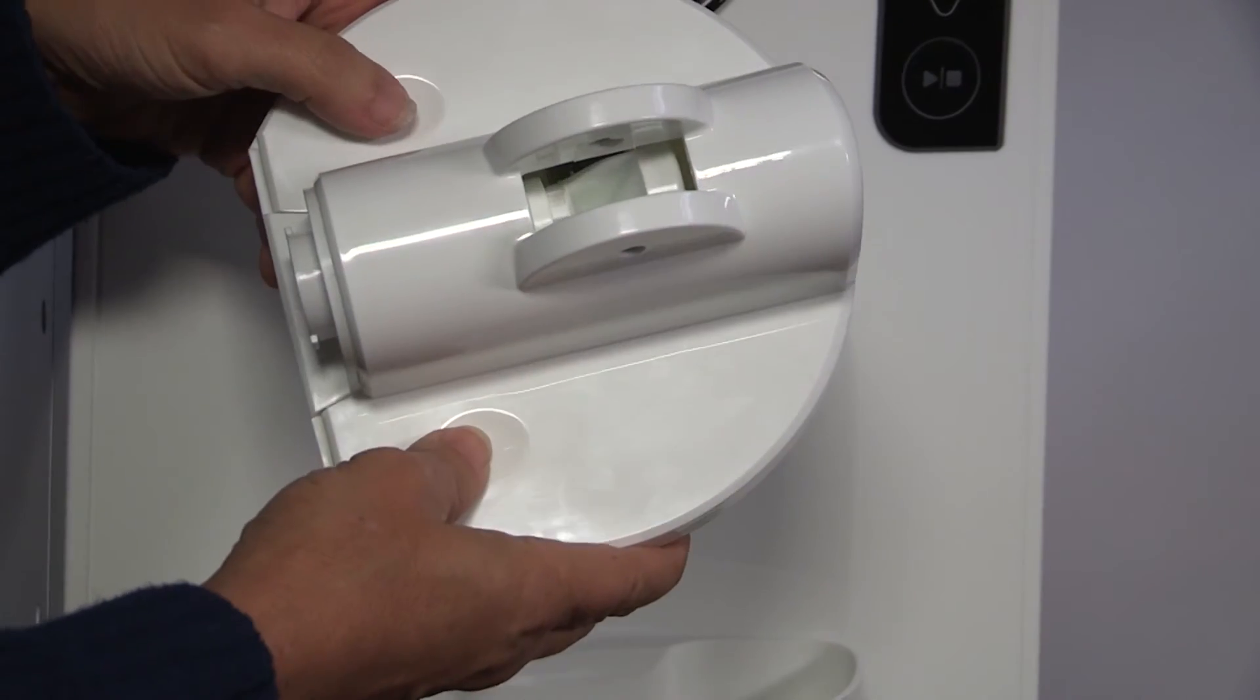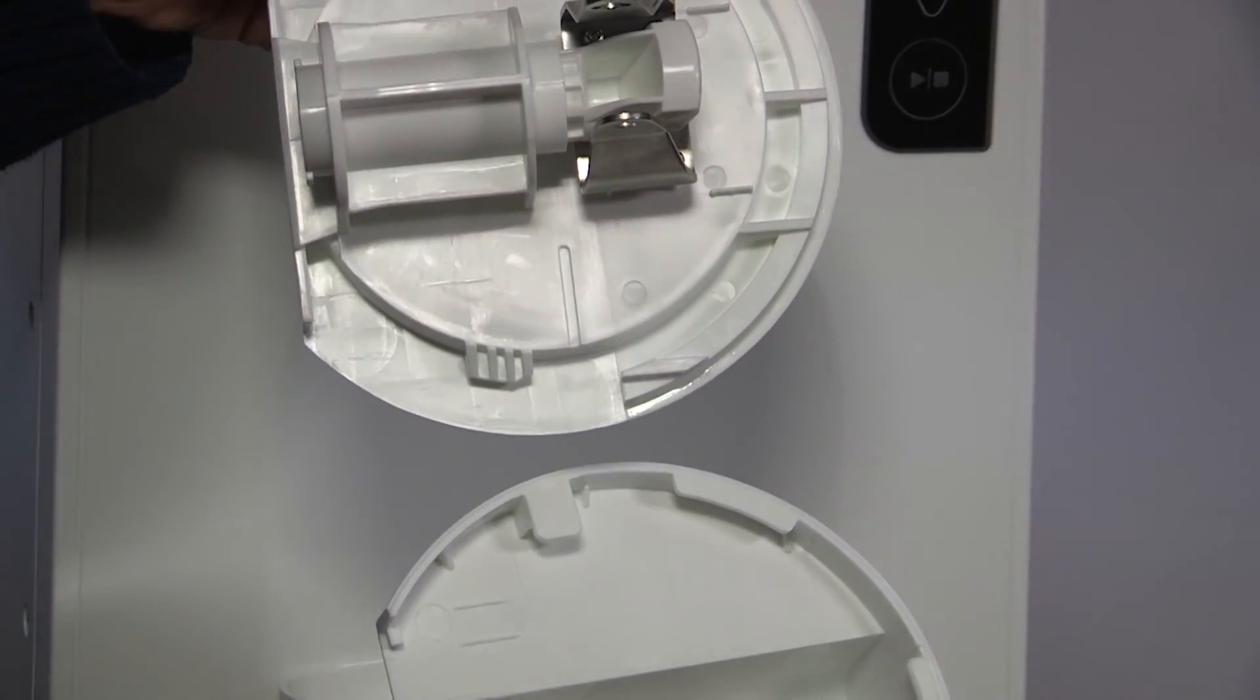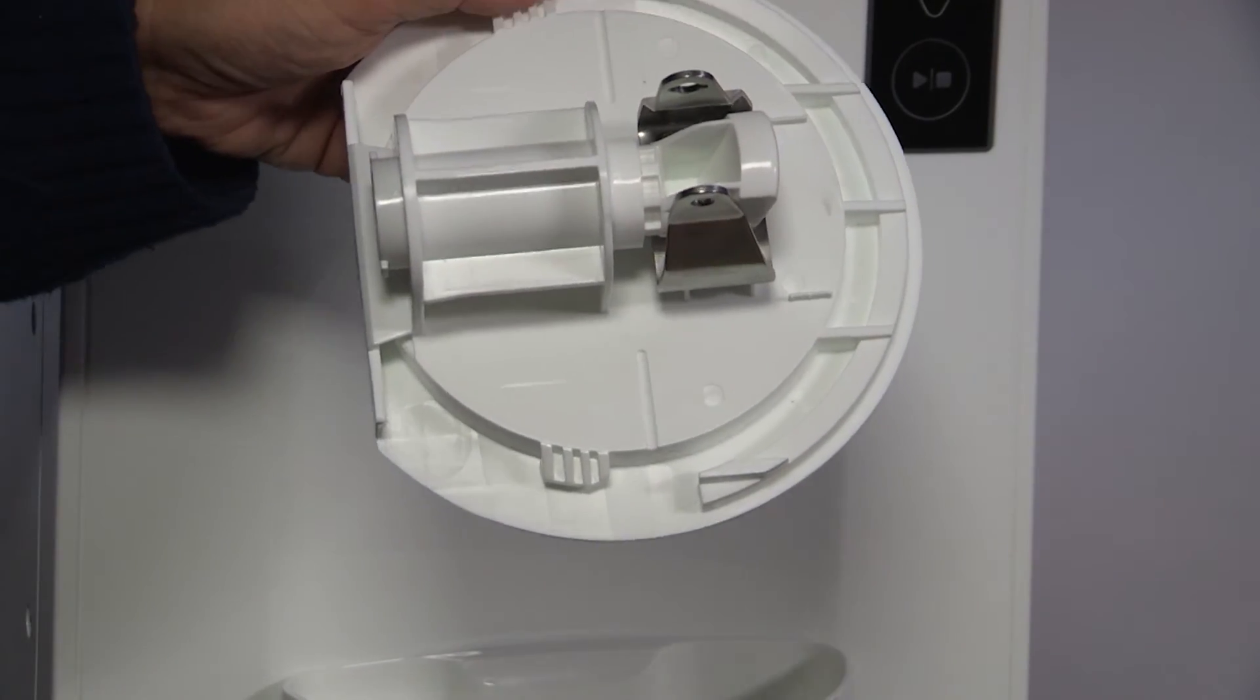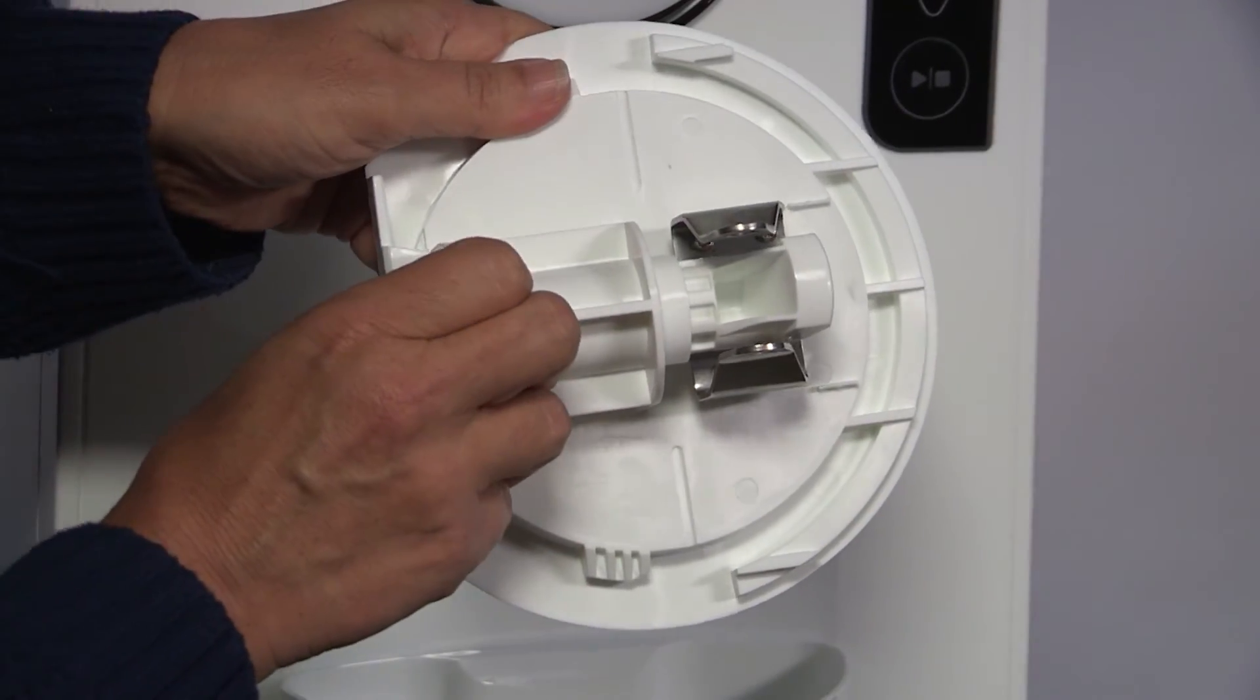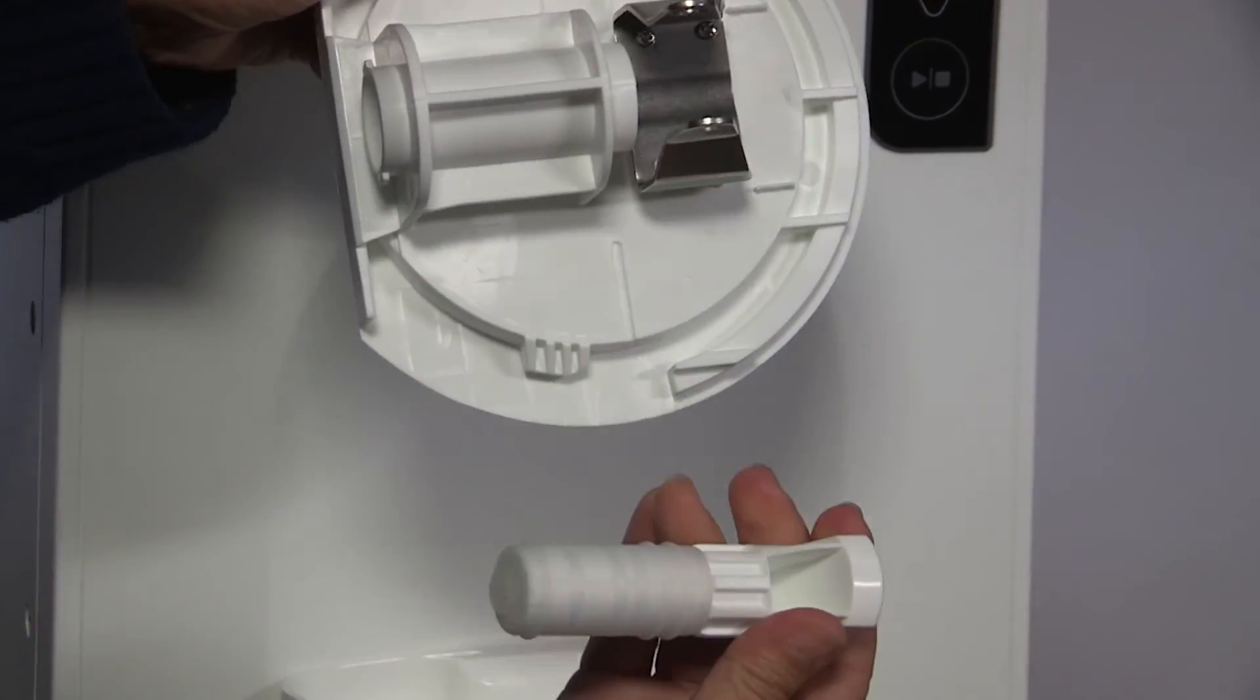With both hands, place your thumbs on both thumb spots and push gently down and up. This will separate the dispense head into two large pieces. Then remove the plunger from the cylinder that is on the back piece.